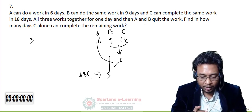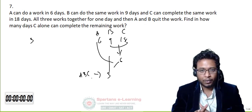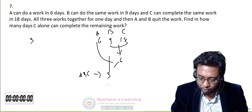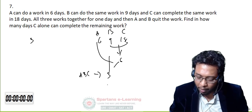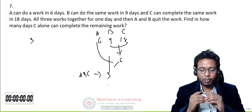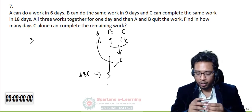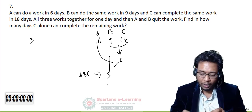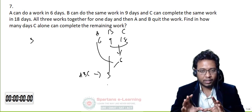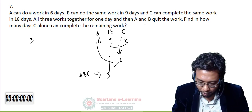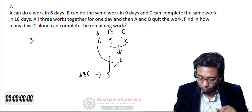A+B+C can complete the work in 3 days. All three worked for 1 day. Since 1/3 of the work is done, 2/3 remains. C alone works at a rate of 1/18 per day, so C needs 2/3 ÷ 1/18 = 12 days to complete the remaining work.